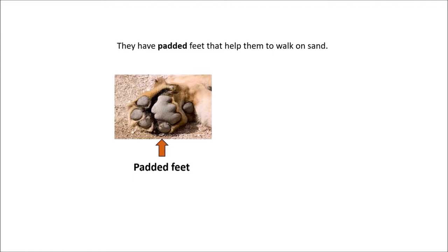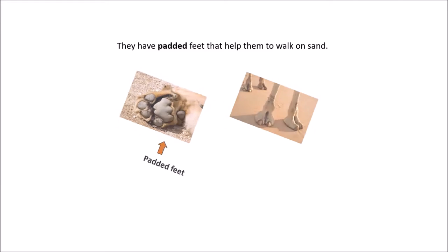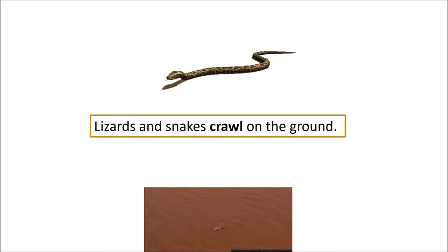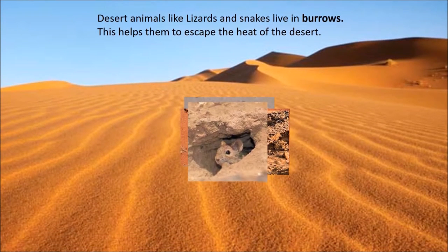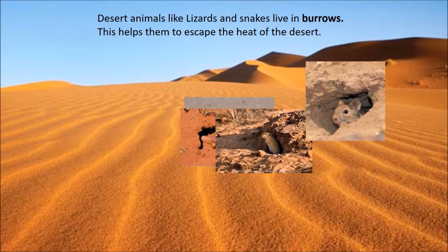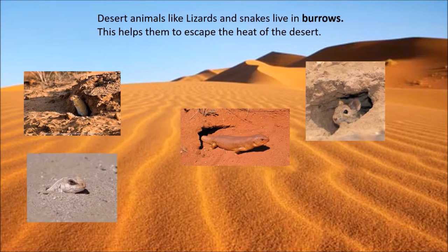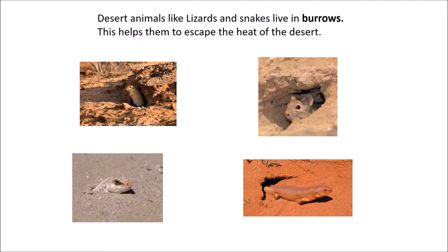See how the padded feet of an animal looks like. Desert animals live in burrows — this is how a burrow looks like. By hiding themselves inside the burrows, they are able to escape the heat of the desert. How intelligent, isn't it?